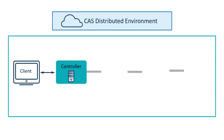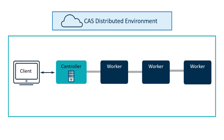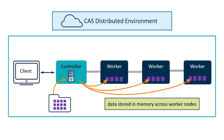The CAS distributed environment consists of a single controller node, which is used to receive commands and schedule tasks, and a collection of worker nodes to perform data processing. Data is stored in memory across the worker nodes, and each worker node performs processing on the data locally before passing results back to the controller.